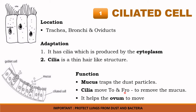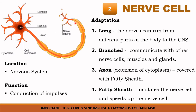The cilia helps to move to and fro to remove the mucus. In the oviduct, you can also find the ciliated cell, which helps the ovum to move towards the uterus for implantation.